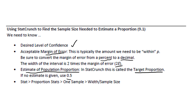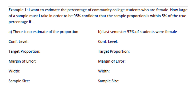Let's try an example. I want to estimate the percentage of community college students who are female. How large of a sample must I take in order to be 95% confident that the sample proportion is within 5% of the true percentage? This is a sample size problem — it's asking how large of a sample must I take. What tells us it's a proportion? We're estimating a percentage, and the margin of error of 5% is given as a percentage. Everything here screams proportion problem.